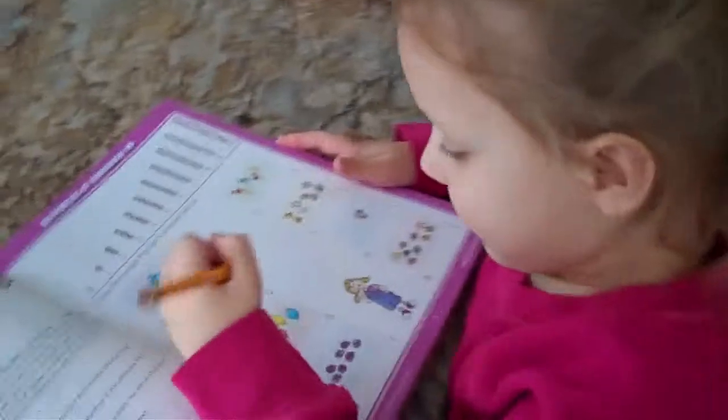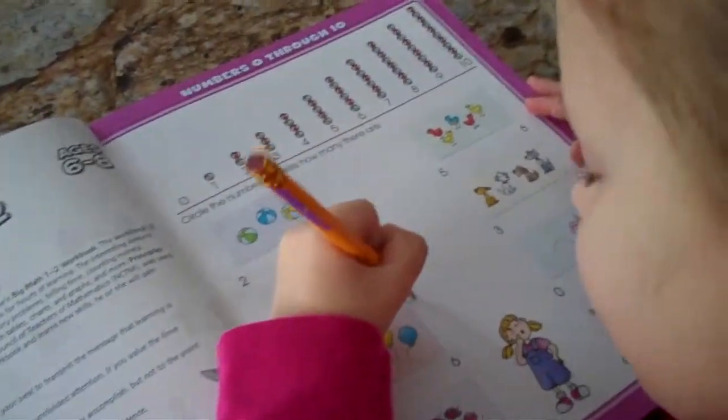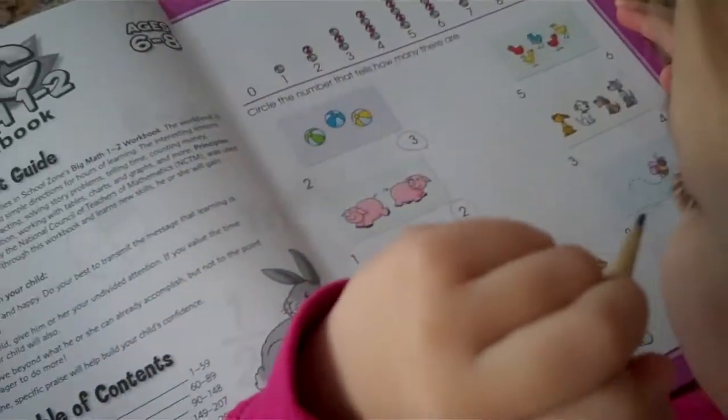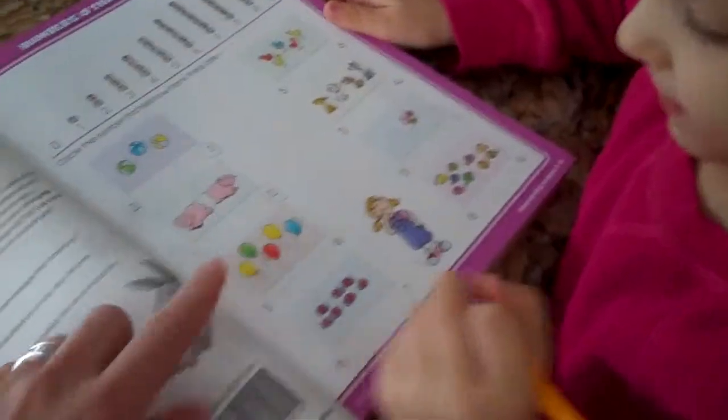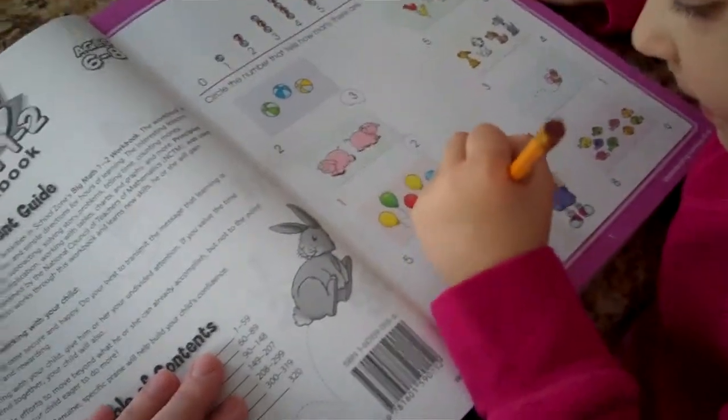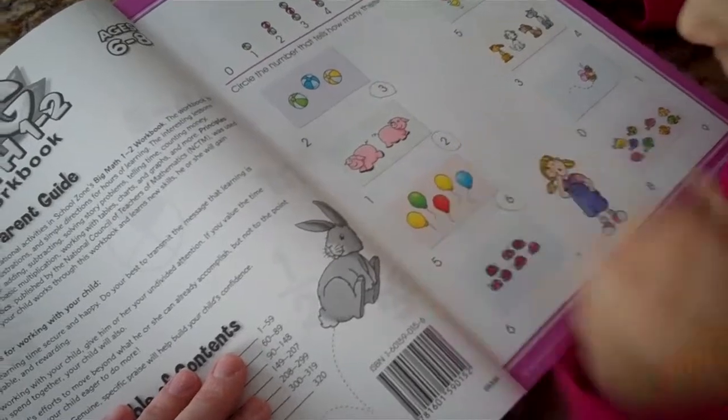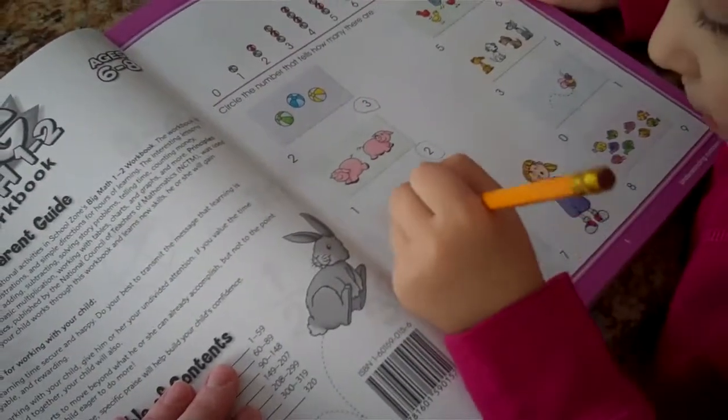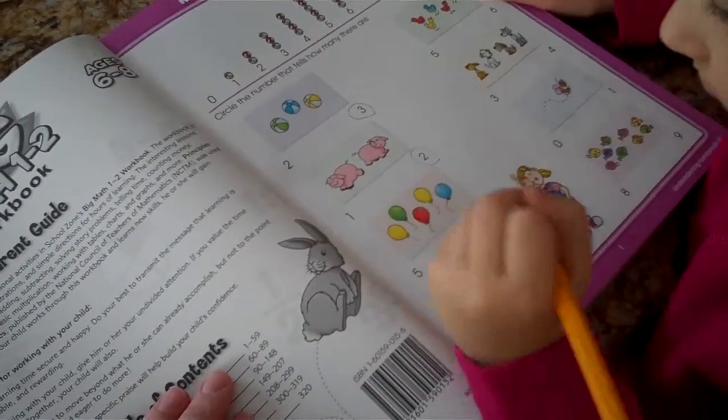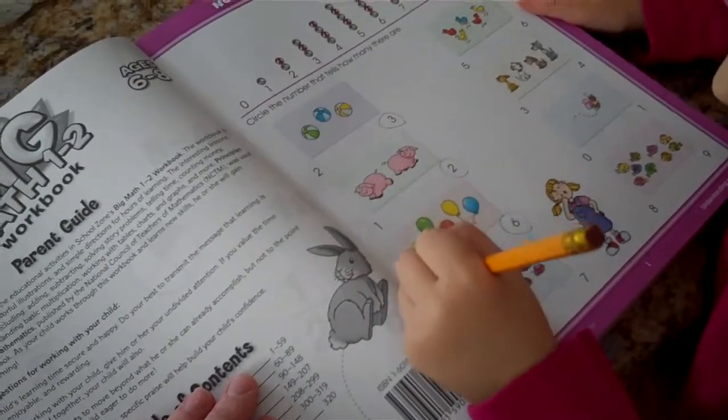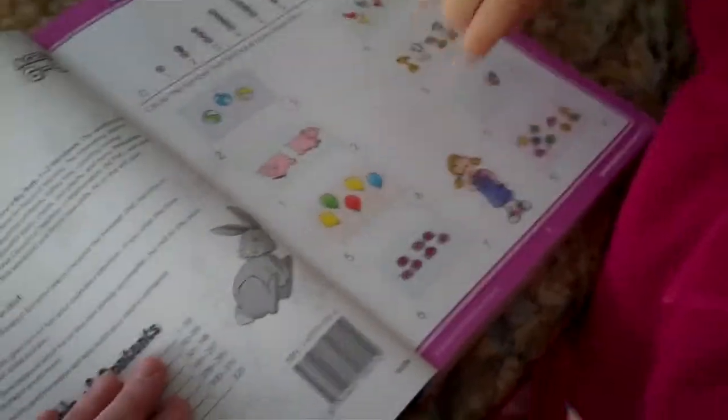Pigs. How many pigs? So how many pigs are there? Two. Good job. How about the balloons? How many balloons? Six. Oh, count them again. Five. One, two, three, four, five. Five. So five balloons.